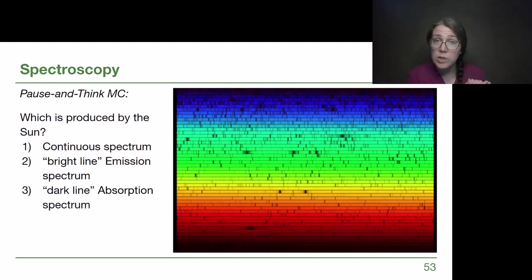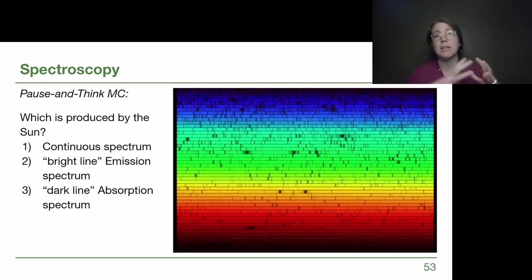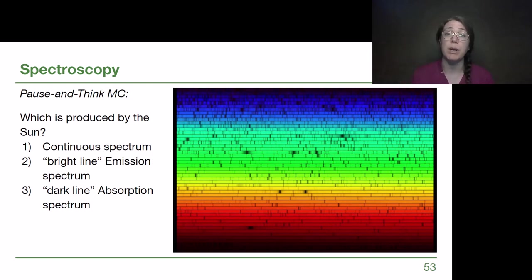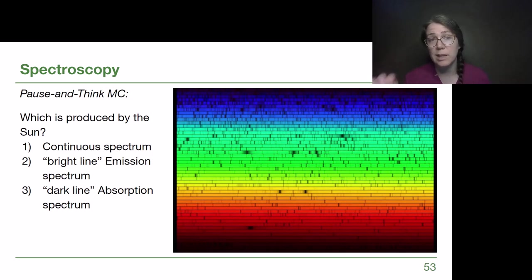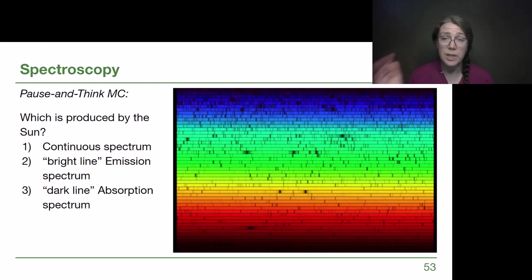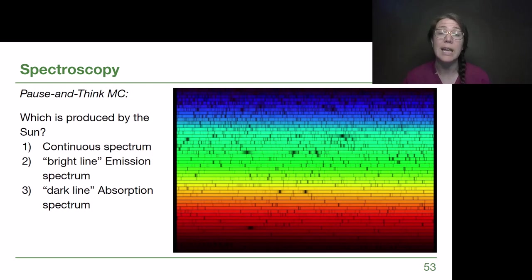The core of the sun created the smooth black body radiation, but as it goes through the outer layers of the sun, we take pieces out based on the elements present. This set of missing lines is telling us what the sun is made out of — which is pretty spectacular. It's how we figure out the composition, and all stars produce absorption spectra, so it's how we study what all stars are made out of.